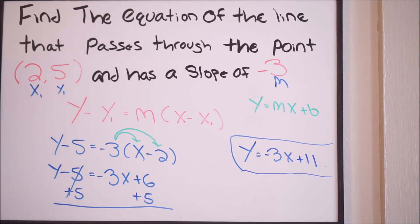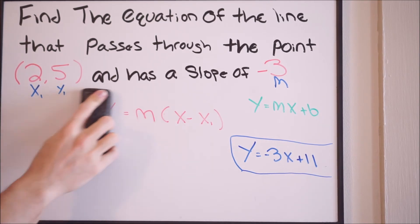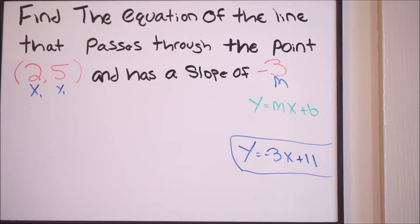There's also another way, so let's cover that way. Let's erase this. So the second option, you can actually just use slope-intercept form here, which is y equals mx plus b.